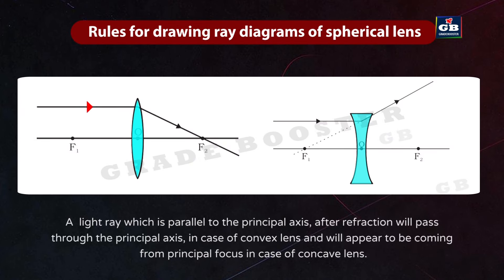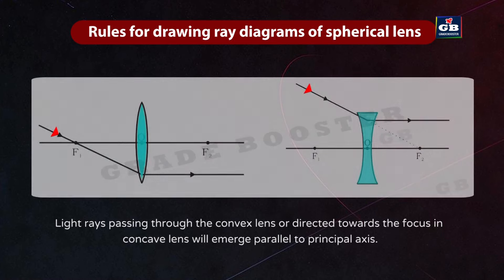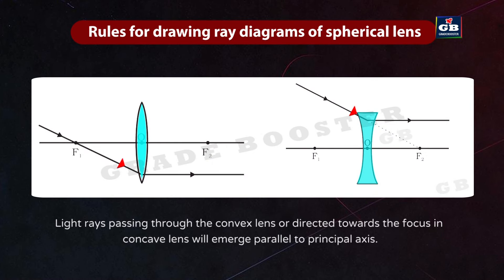Rules for ray diagrams of spherical lenses: a ray parallel to the principal axis, after refraction, passes through the principal focus in a convex lens or appears to come from it in a concave lens. A ray passing through the principal focus (convex) or directed towards it (concave) emerges parallel to the principal axis. A ray directed to the optical center emerges undeviated in both convex and concave lenses.